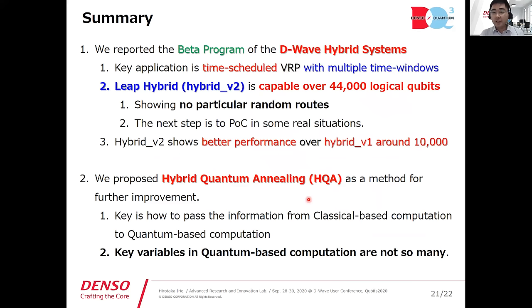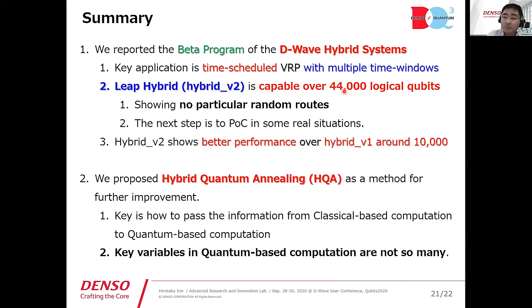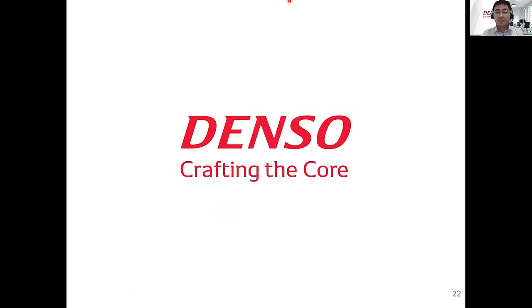In summary, the key message is that D-Wave Hybrid V2 is capable of handling over 44,000 qubits and more, and the quantum QUBO formulation can give non-trivial solutions. So don't be afraid of creating the QUBO formulation. Thank you.